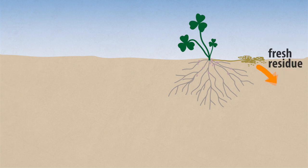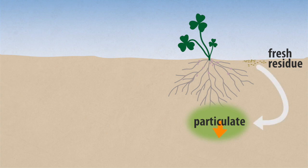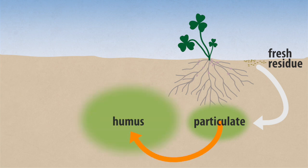Fresh residues are broken down into smaller pieces and become part of the particulate organic matter fraction. As the material is further decomposed, a proportion of more biologically stable material enters the humus pool.